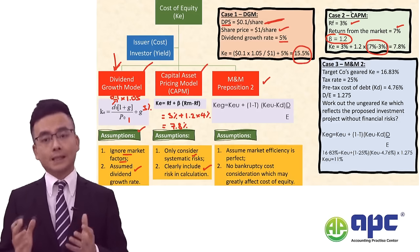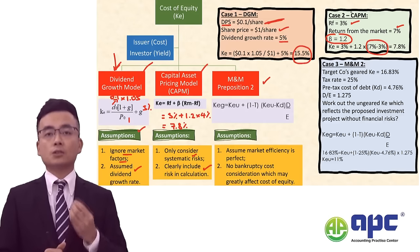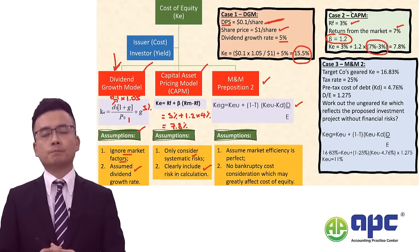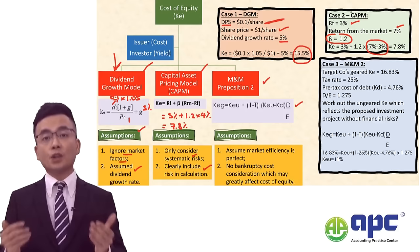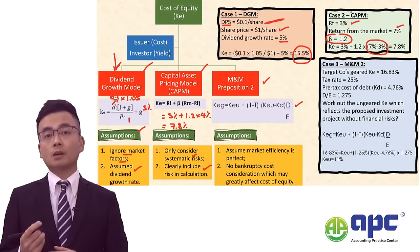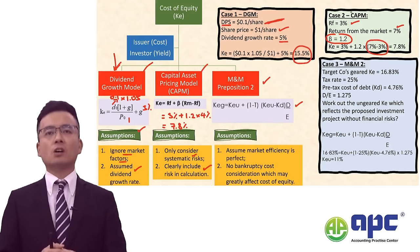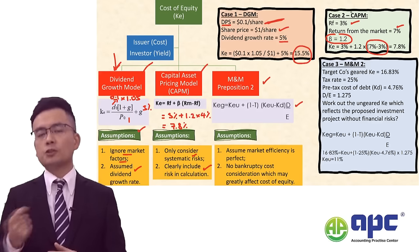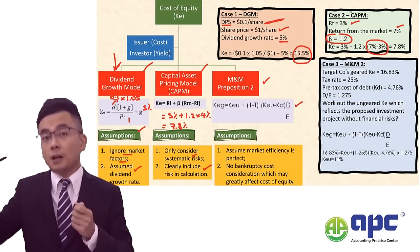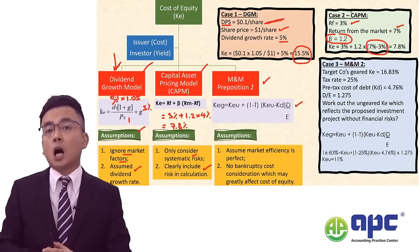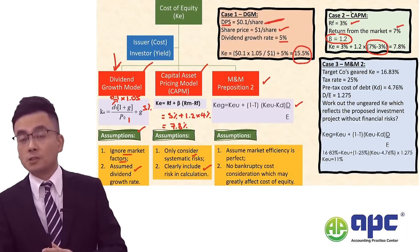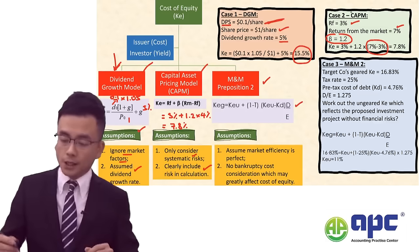The final model — where the formula is given by the examiner — is to apply Modigliani and Miller's Proposition Number 2 to compute the cost of equity. This is especially relevant if our company has no debt at all and is willing to take on an additional project. We may find a target company's cost of equity directly, but we need to remove its gearing or financial risk from the target company in order to calculate our ungeared cost of equity, which should only reflect business risk.